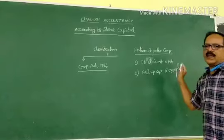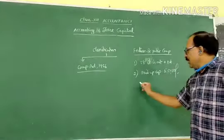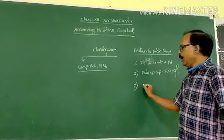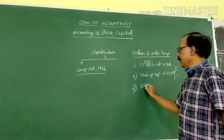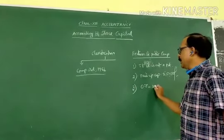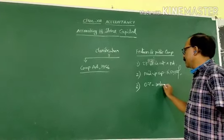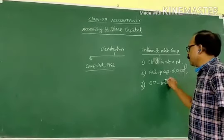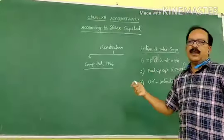This is the second feature. Then, with respect to number of members, the minimum number of members is 7, but for the maximum number of members, there is no limit in the case of public limited companies.